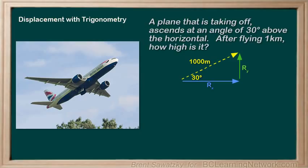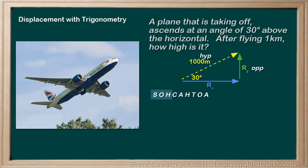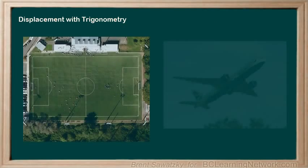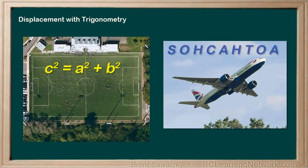To determine ry, we note that ry is opposite the 30-degree angle, and the 1,000 meters is the hypotenuse. Using SOHCAHTOA, the sine ratio uses opposite and hypotenuse, so we set up the equation and solve for ry by multiplying both sides by 1,000 meters. We get ry equals 500 meters up — the plane rises 500 meters during its 1,000 meters of ascent. In this tutorial, we took another look at displacement and used our trig knowledge to determine both magnitudes and directions relating to displacement.